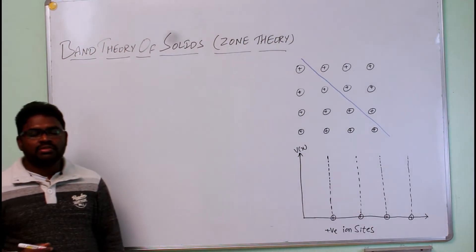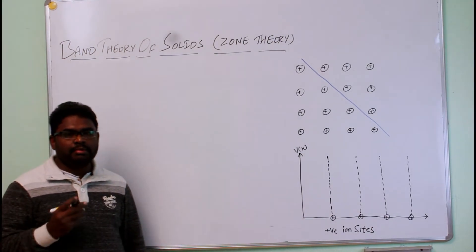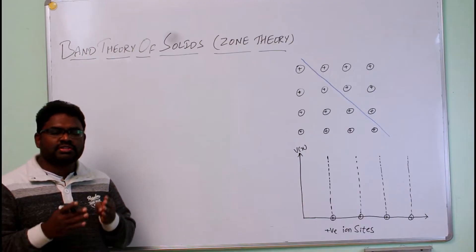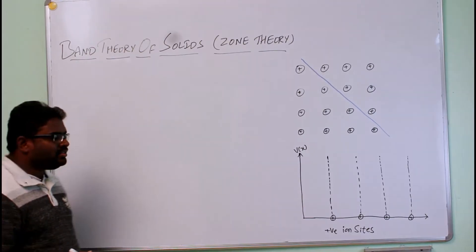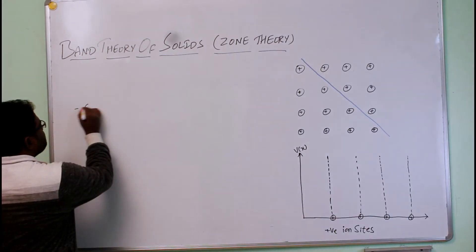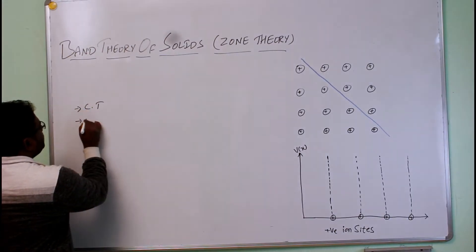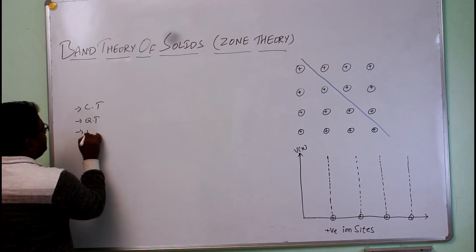From the beginning of the 20th century onwards, scientists developed three main theories in order to distinguish the metals as conductors, semiconductors and insulators. The basic three theories are the classical theory, quantum theory and band theory of solids.